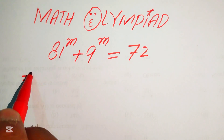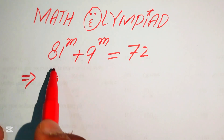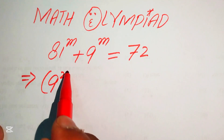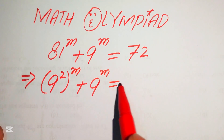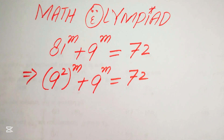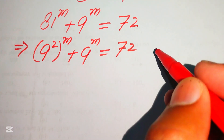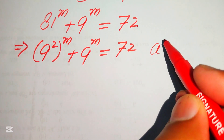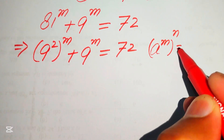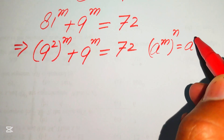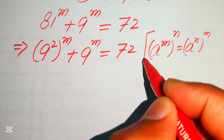The very first step is to rewrite this equation by writing 81 as 9 squared, so we have 9 squared to the power of m. We apply the exponent law: if you have a to the power of m to the power of n, then we can interchange those two exponents and write it as a to the power of n to the power of m.